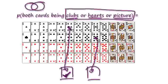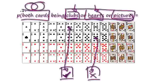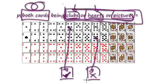A spade — we want a card where it's clubs, or hearts, or picture. A spade is not any of these, so this would be a bad outcome.